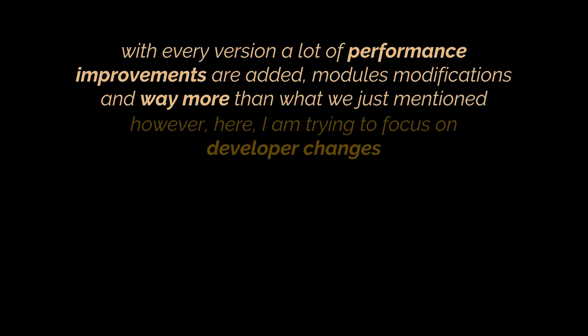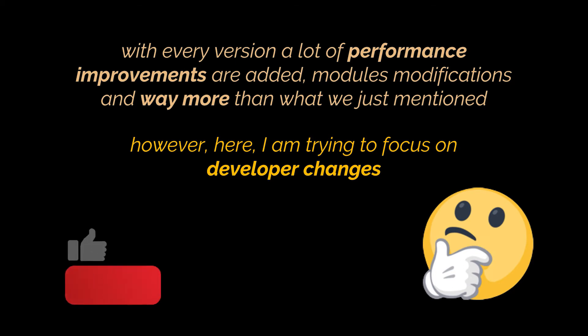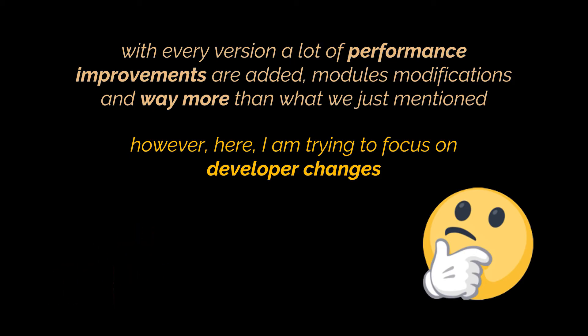I know that with every version a lot of performance improvements are added, modules, modifications, and way more than what we just mentioned. However, here I am trying to focus on developer changes while keeping the video as concise as possible. So let's go ahead and lay out the features introduced by Java 17 — or more precisely, by all the versions from 12 until we reach 17.